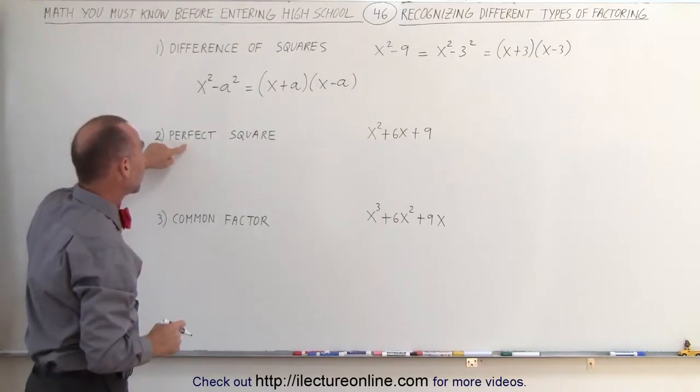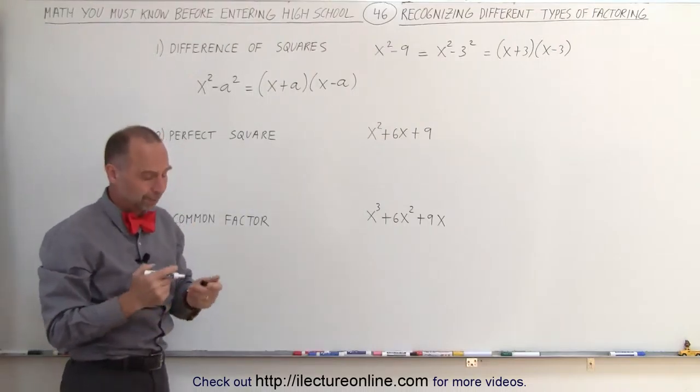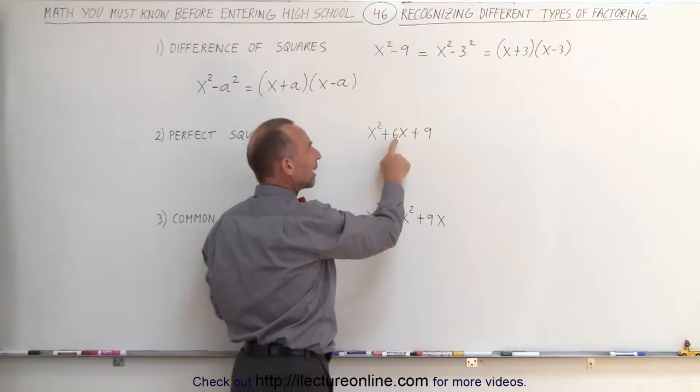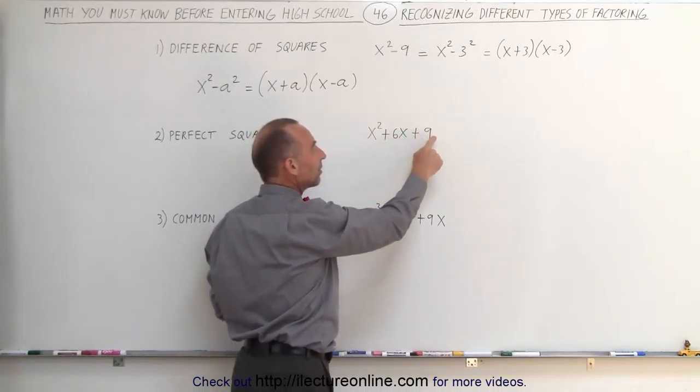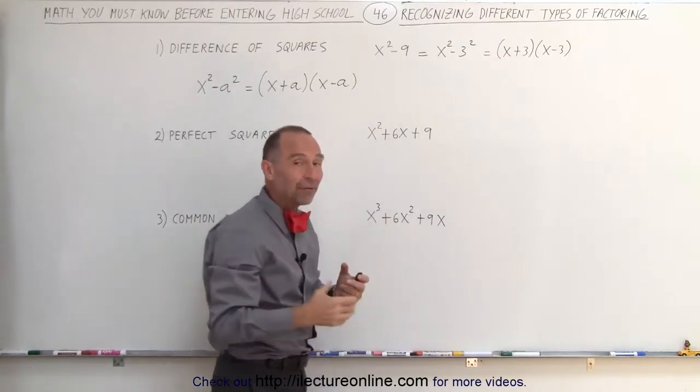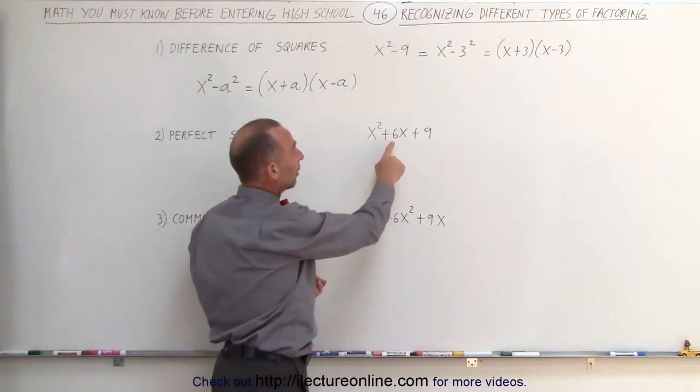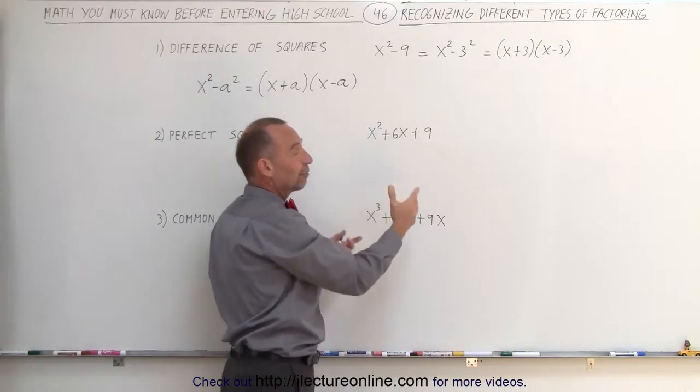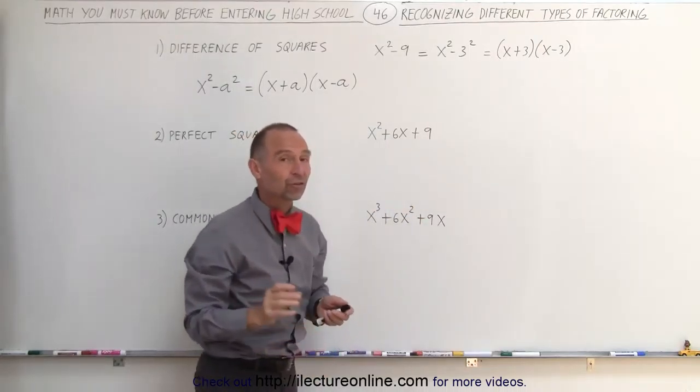Next, we may end up with something that's called the perfect square. If we have a trinomial like this, and the coefficient of the middle term, if we take that coefficient, divide it by 2 and square it, and we get the third number, then we have a perfect square. For example, when we take 6 and divide it by 2, we get 3. 3 squared gives us 9. Therefore, this is what we call a perfect square.